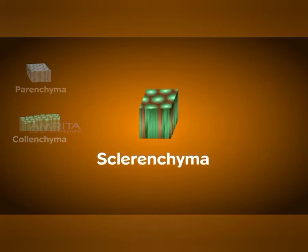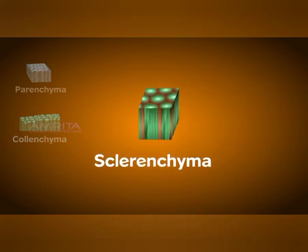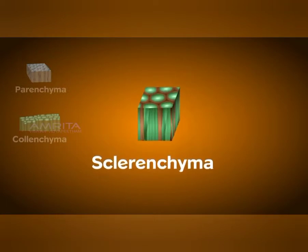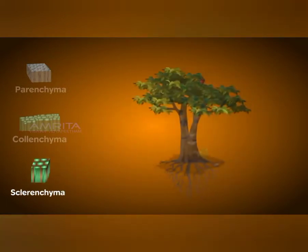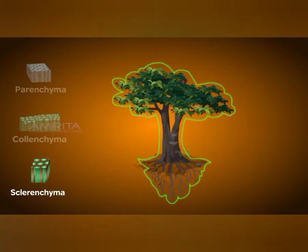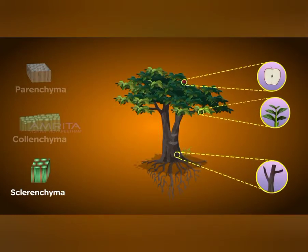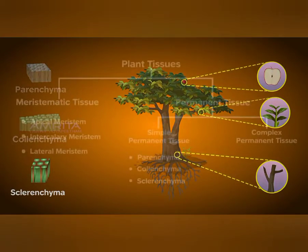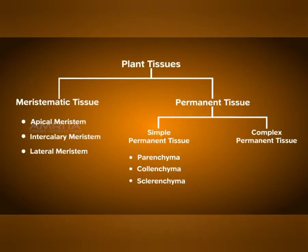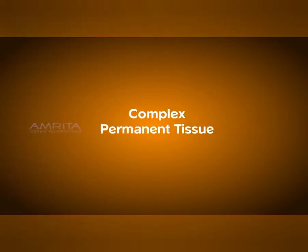Sclerenchyma includes dead cells and their cell walls are deposited with lignin. They are very hard and seen in two different types which are fibers and sclerites. Sclerites can be seen in the nuts, shells, stems and mid-ribs, etc. Fibers can be seen in the case of coconut husk, hemp and cotton fibers, etc.